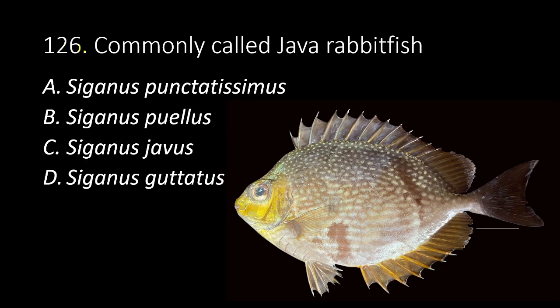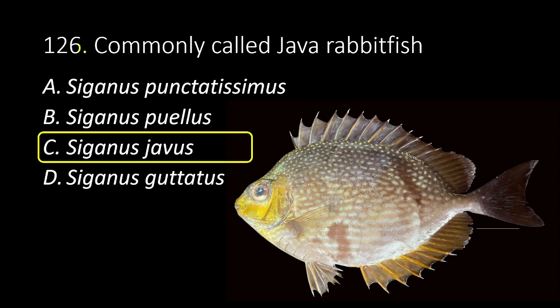126. Commonly called java rabbit fish. A. Siganus punctatissimus. B. Siganus puellus. C. Siganus javus. D. Siganus guttatus. The answer is C, Siganus javus.